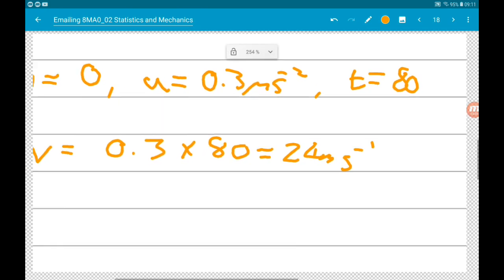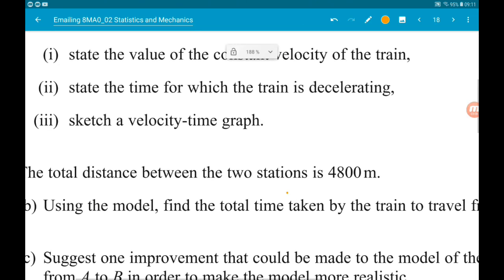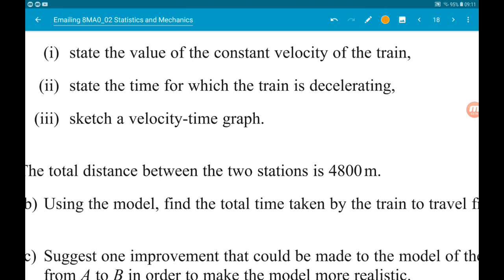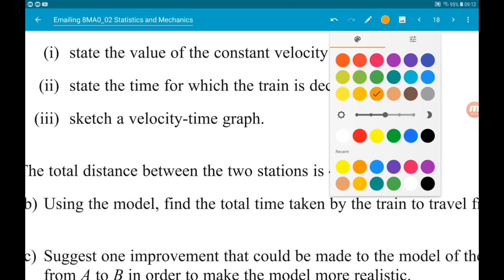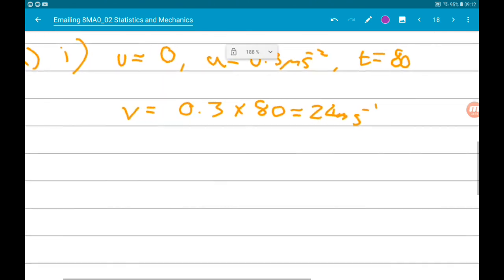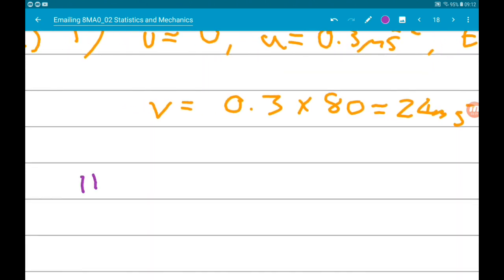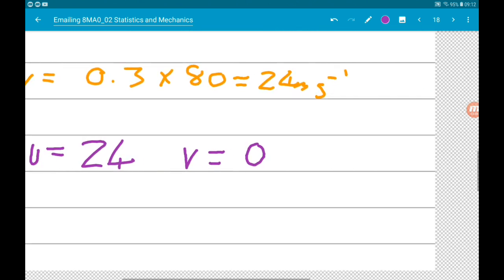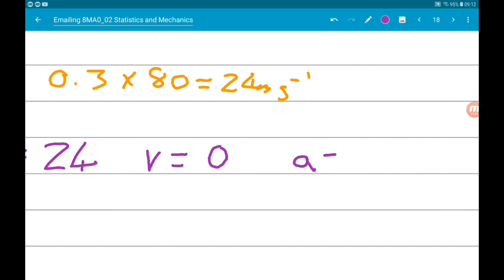Okay, then part two. One says two, state the time for which the train was decelerating. We know that u is now the 24, because that was our constant velocity. So when we start decelerating, that is our initial velocity. We know that v is equal to zero, because we come to rest at station B, and we know our acceleration is minus 0.5, because it's decelerating at 0.5 meters per second squared.